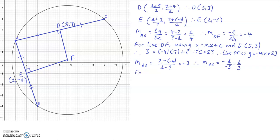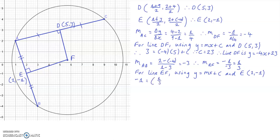For line EF, similarly using y equals mx plus c, and the point which the line EF passes through. Substituting in gives c equals minus 5 over 3. Therefore, the equation of line EF is y equals one third x minus 5 over 3.